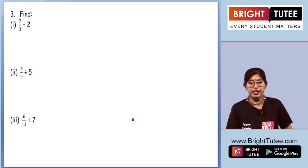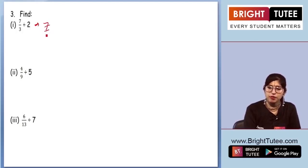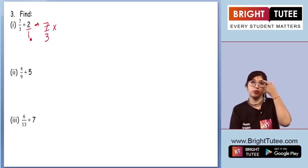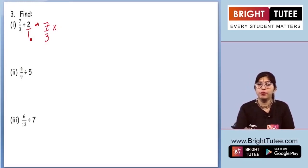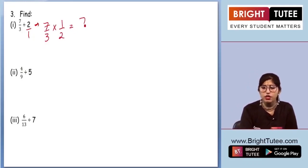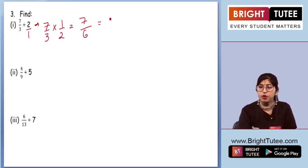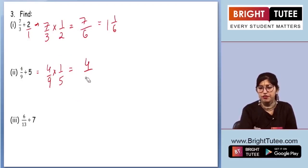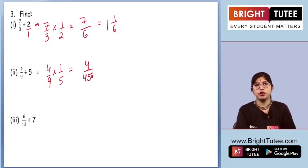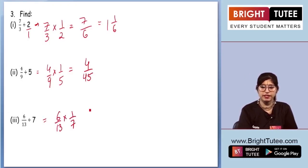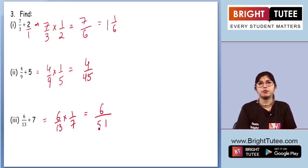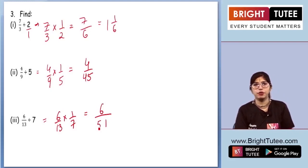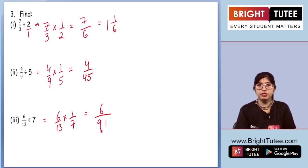Moving on to question 3, we need to find the following. For the first part, we keep 7 by 3 as it is, write the multiplication sign, write 2 as 2 by 1, and do the reciprocal of 2 by 1, which is 1 by 2. We cannot cancel anything out, so we multiply numerators and denominators. It is an improper fraction, so we convert it to a mixed fraction. For the second part, we do 4 by 9 times 1 by 5, getting 4 by 45, which is a proper fraction. For the third part, the reciprocal of 7 gives 1 by 7, and multiplying gives 6 by 91 — note: 13 times 7 is 91, not 51.